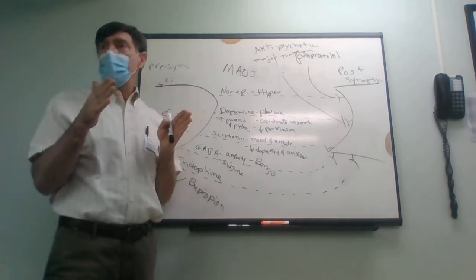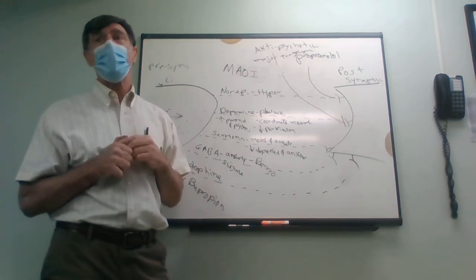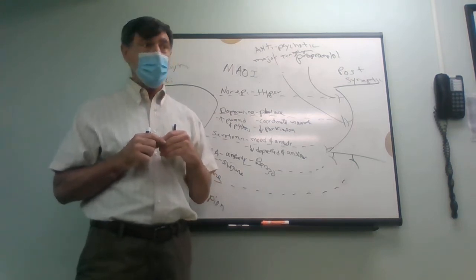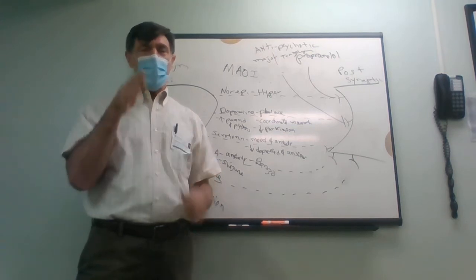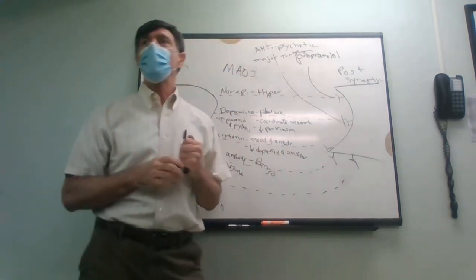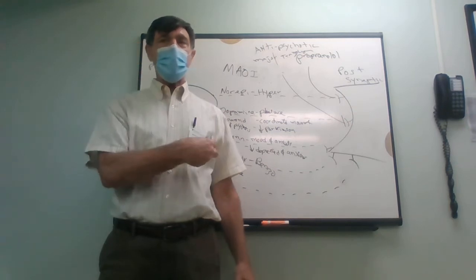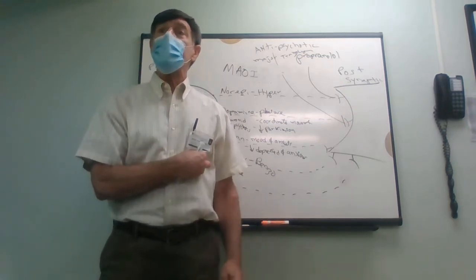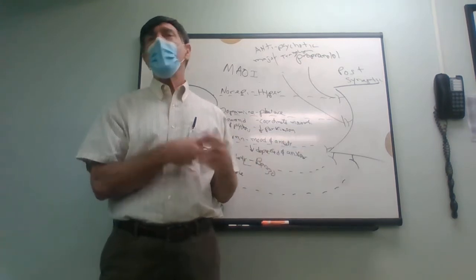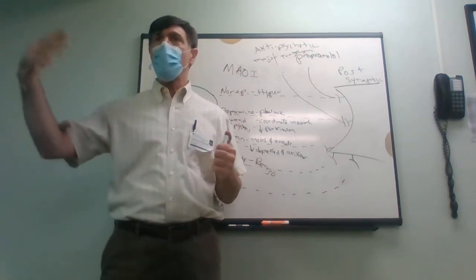The problem with lithium is that the toxic range is right next to the therapeutic range — a narrow therapeutic index. Another medicine with a very narrow therapeutic index is digoxin, which stabilizes the heartbeat. As nurses, before we give a digoxin pill, we listen to the patient's heart rate with a stethoscope. If it's less than 60 beats per minute, you hold the medicine — that's standard operating procedure.